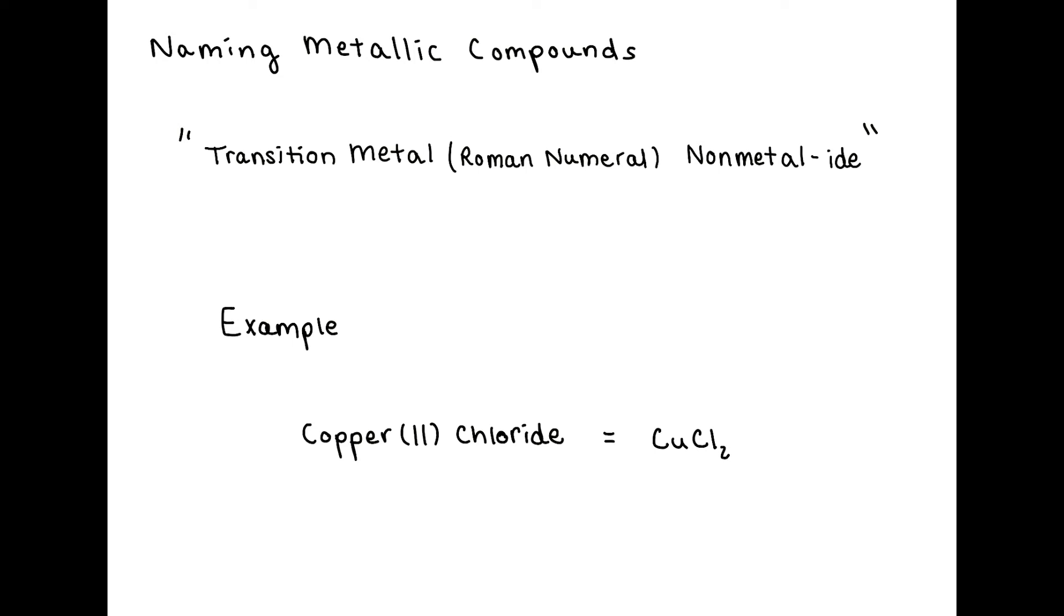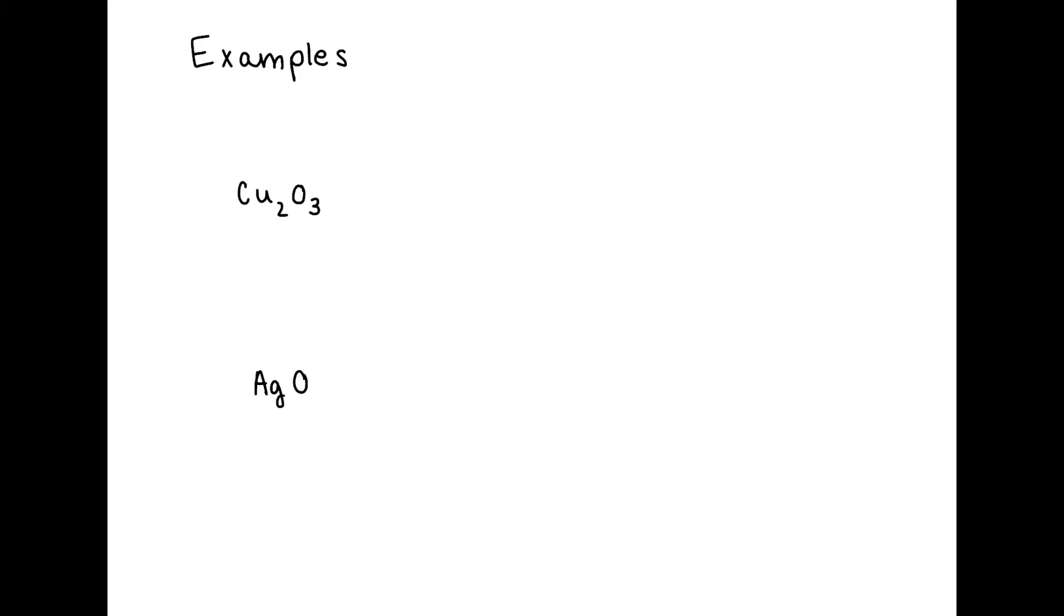Because transition metals can have a variety of charges, you have to describe what charge specifically is being referred to in the compound by using the Roman numeral. Now let's talk about some examples.